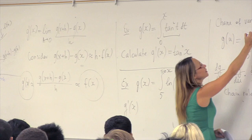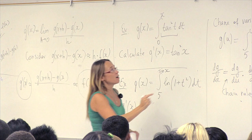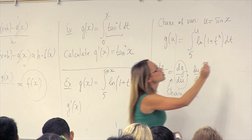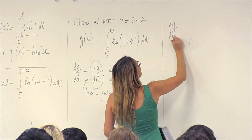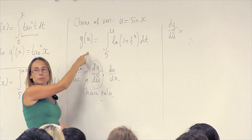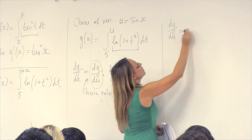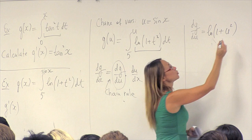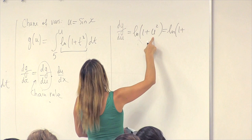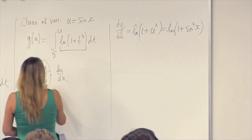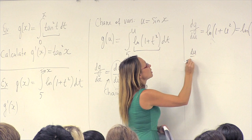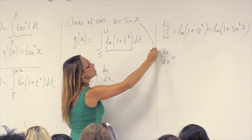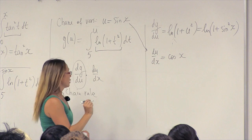By the fundamental theorem of calculus part one, dg/du is the integrand evaluated at u, which is log(1 + u²). Remembering that u is sin(x), we write log(1 + sin²(x)). Then du/dx: since u is sin(x), du/dx is cos(x). Therefore, altogether, the answer is log(1 + sin²(x)) times cos(x).